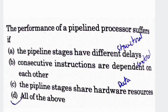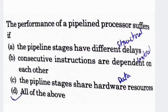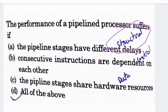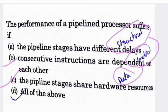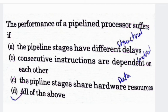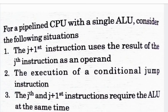Next question: the performance of a pipelined processor suffers if — option A: the pipeline stages have different delays (structural hazard), option B: consecutive instructions depend on each other (data hazard), option C: pipeline stages share hardware resources (structural hazard). Since all of these cause performance degradation, option D — all of the above — is your correct answer.